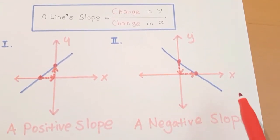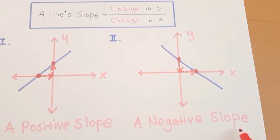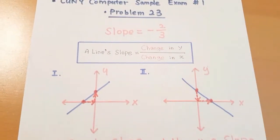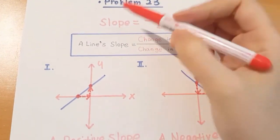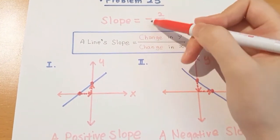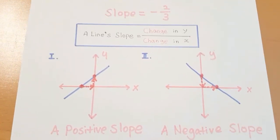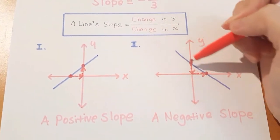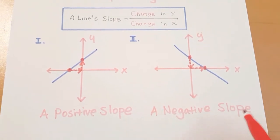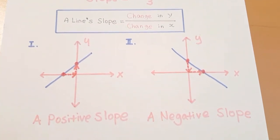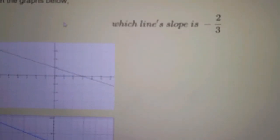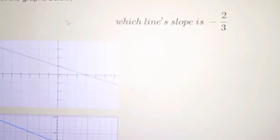So we can say that this line has a negative slope. So the problem 23, the given slope is negative, so we should find a line that's falling which has a negative slope. Let's look at the four given graphs now.